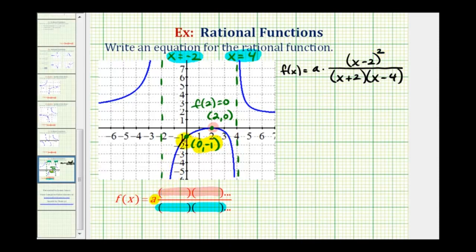Again, because of the behavior of our function, meaning it touches and then bounces back, we know we have to have an even number of factors of (x-2). So we'll select the simplest case when we have two factors of (x-2).